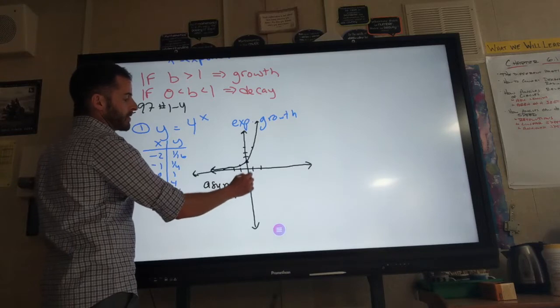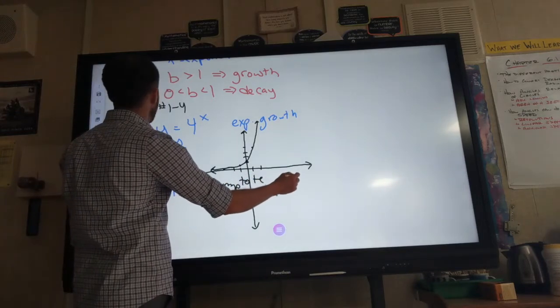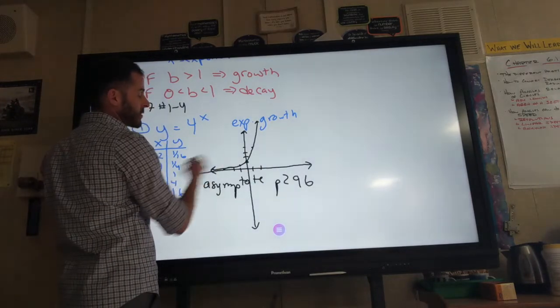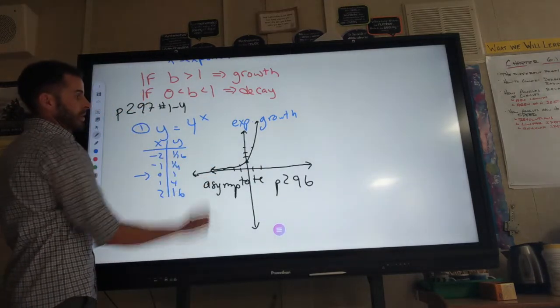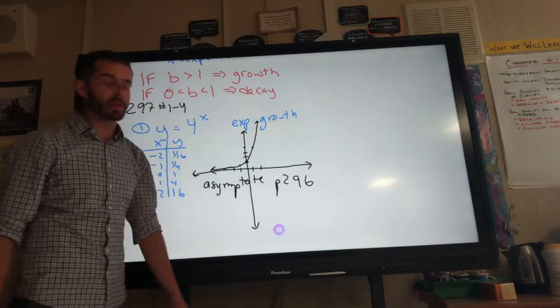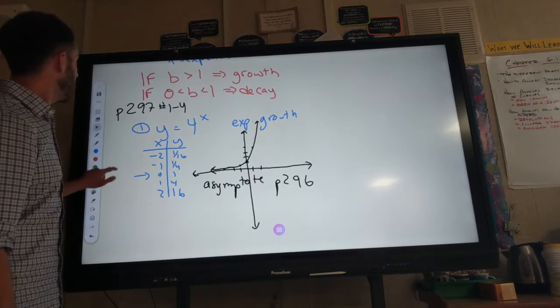You can find the definition on page 296. The asymptote, the x-axis here, is your asymptote. So, t-chart goes with graph. It is a growth function. It goes up really steeply, really fast.